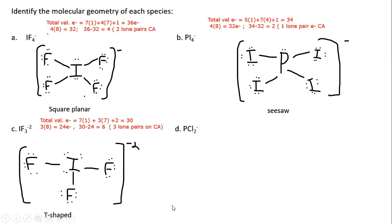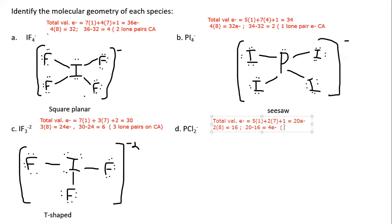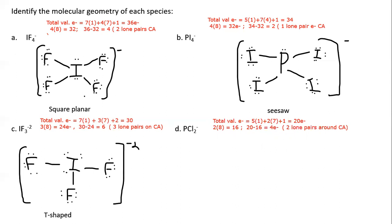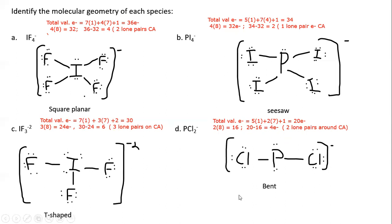For the phosphorus dichloride ion, total valence electrons equal 20. Two chlorines each wanting 8 electrons use 16, leaving 4 electrons — two lone pairs on the central atom. Two bonding pairs and two lone pairs give four total electron pairs. This is a subset of tetrahedral electron geometry: bent.